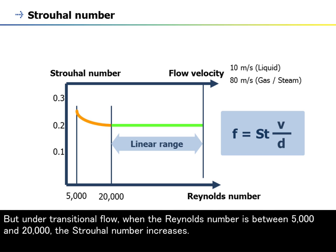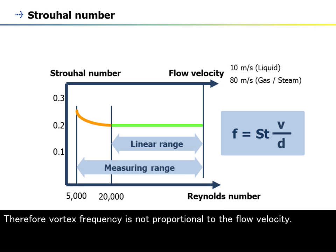But under transitional flow, when the Reynolds number is between 5,000 and 20,000, the Strouhal number increases. Therefore, vortex frequency is not proportional to the flow velocity.